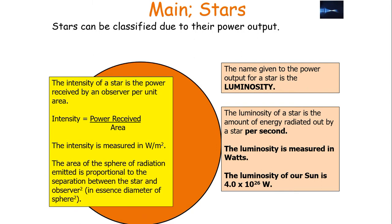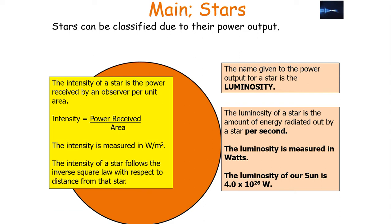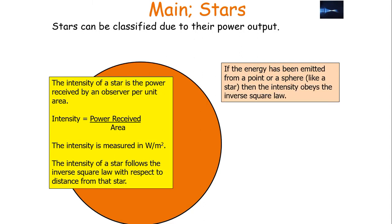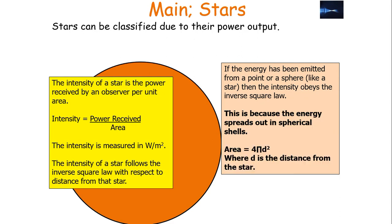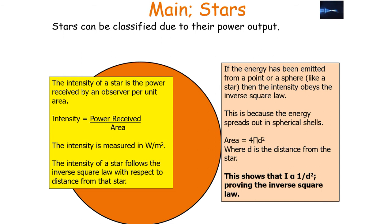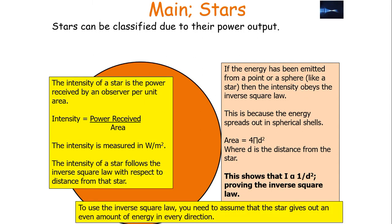The area of the sphere of radiation emitted is proportional to the separation between the star and the observer squared. So the intensity of a star follows the inverse square law with respect to distance from that star. The energy spreads out in spherical shells where the area equals 4πd², where d is the distance from the star, showing that intensity is directly proportional to 1 over distance squared. To use the inverse square law, you must assume the star gives out an even amount of energy in every direction.